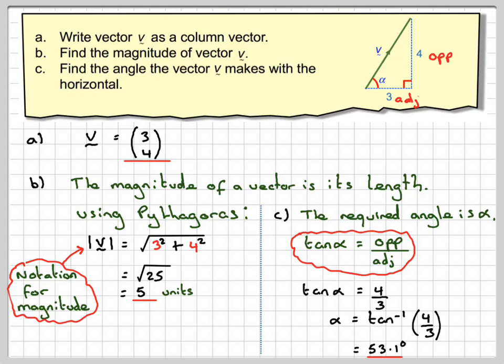So, this has been a video to show you how to write a vector as a column vector, find the magnitude, i.e. its length, and the angle a vector makes with the horizontal. I hope you've understood, and thank you very much for watching.